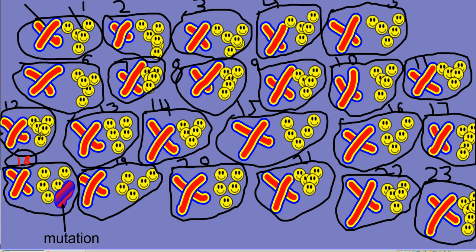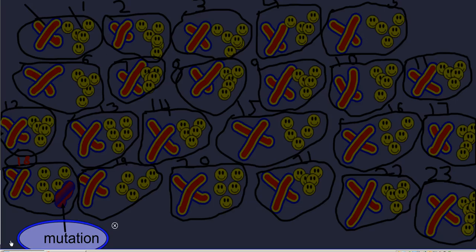In Trisomy 18, you can see that on the 18th chromosome, right over here, there is an extra chromosome. So it has three instead of two. This is a mutation. Evolutionists will say this is a good thing. I can tell you that it definitely does not make life easier.